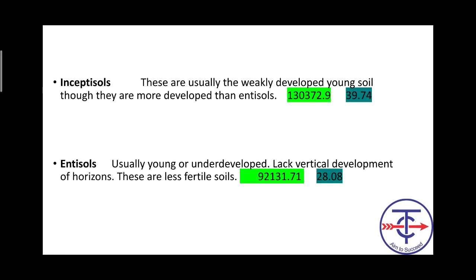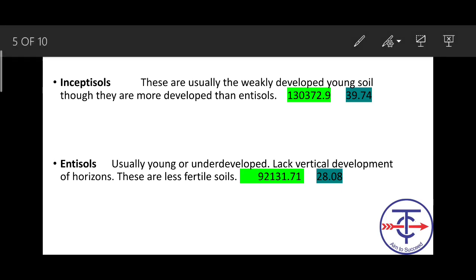Entisols are more mature than Inceptisols. You can see alluvial soil as an example, which is completely mature. These are found in Tundra areas and glacial deposits. Inceptisols are like alluvial soils in India.